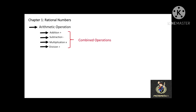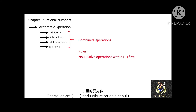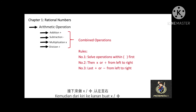The final secret of this chapter is combined operations, where you may have addition, subtraction, multiplication, and division in one operation. To do combined operations, you have to solve step by step. First, do the operation within the bracket first. Then do the multiplication or division from left to right. And last, do your addition or subtraction from left to right.